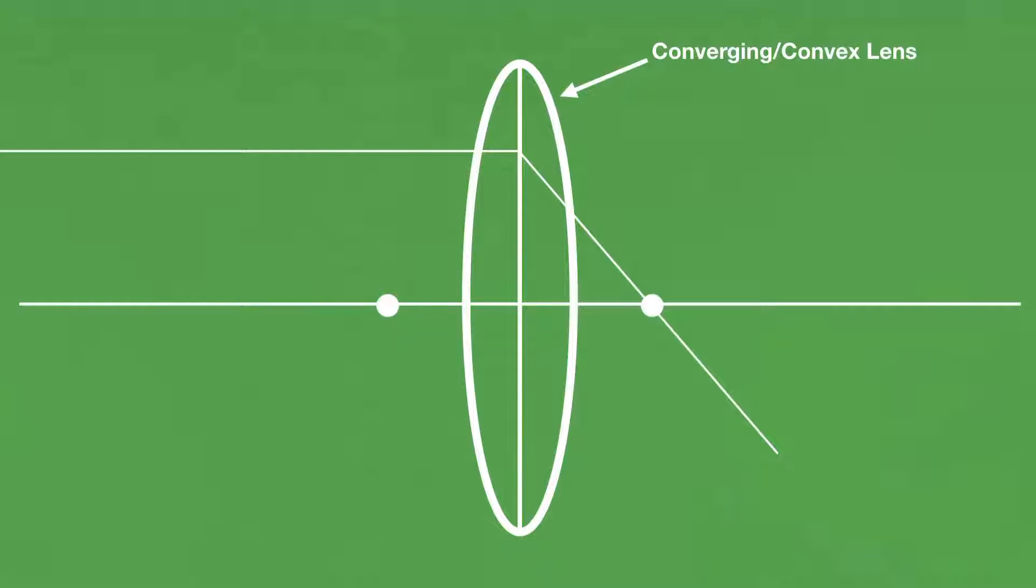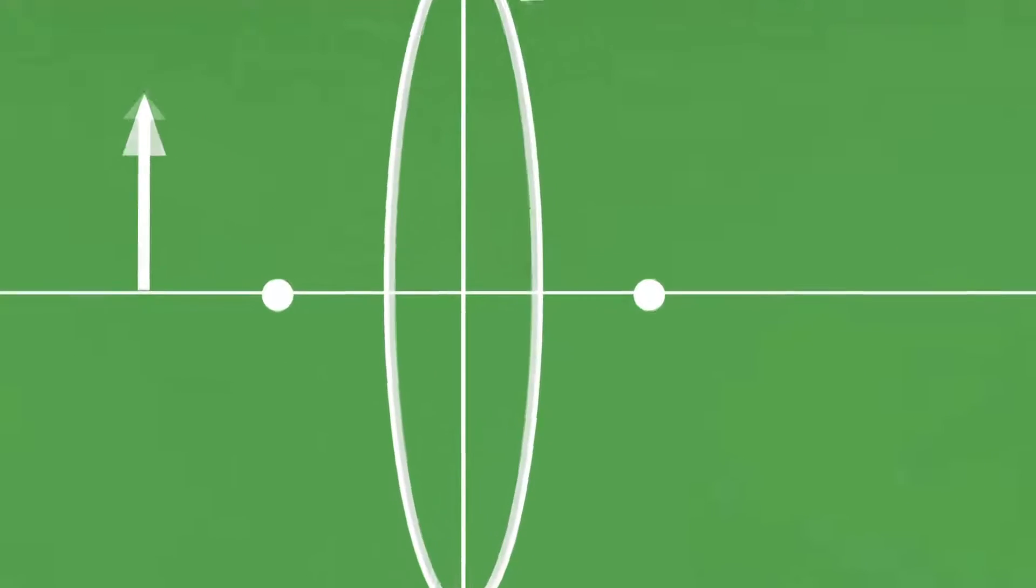In exams, they often use an arrow as the object, so let's do that as we experiment with this lens. As you can see, the arrow is currently behind this blinking point, which we're going to call the focal point. There is another one of these equidistant from the lens on the other side.